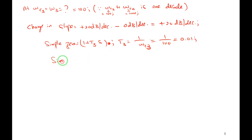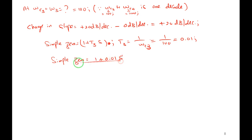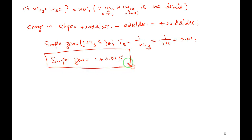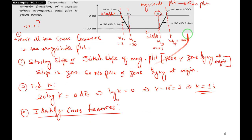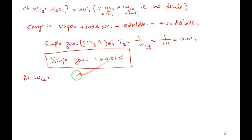Initial (starting) slope is −40 dB/decade. Wait — the initial slope is actually +40 dB/decade. This means two zeros are lying at the origin, giving the factor s².